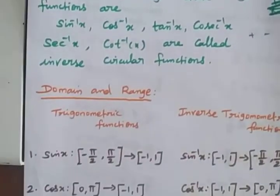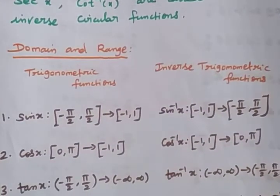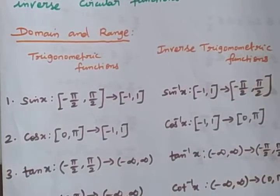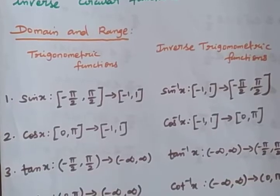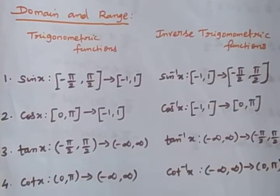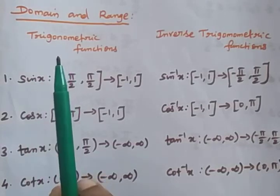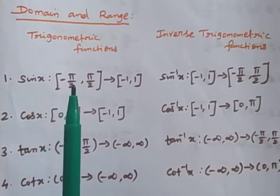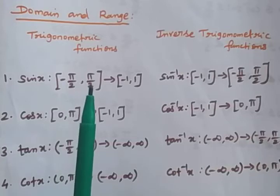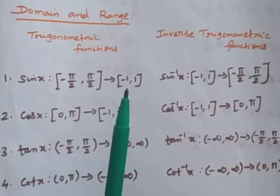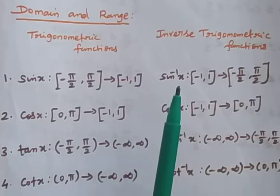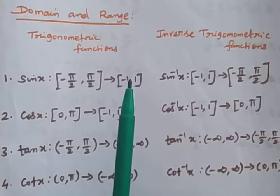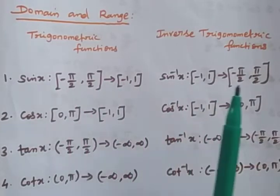Next is the domain and range of trigonometric functions and inverse trigonometric functions. For sin x, the range is [−π/2, π/2] and the domain is [−1, 1]. For sin⁻¹(x), the domain is [−1, 1] and the range is [−π/2, +π/2].